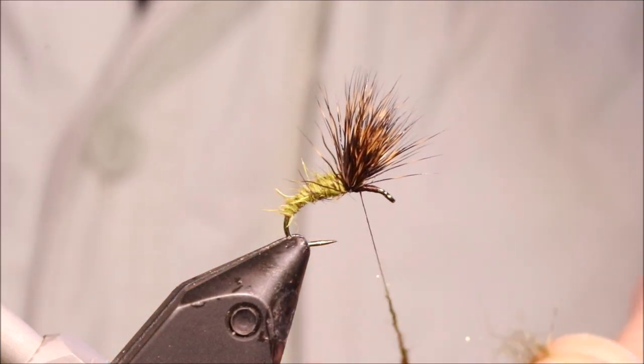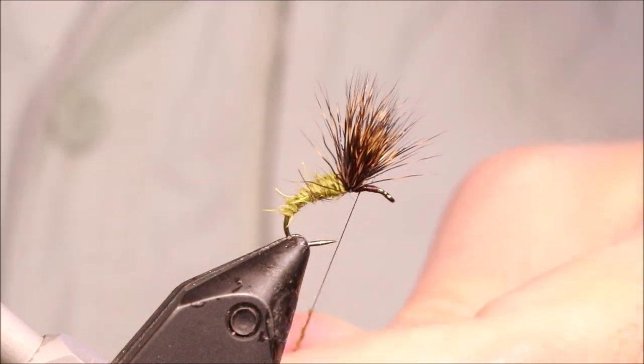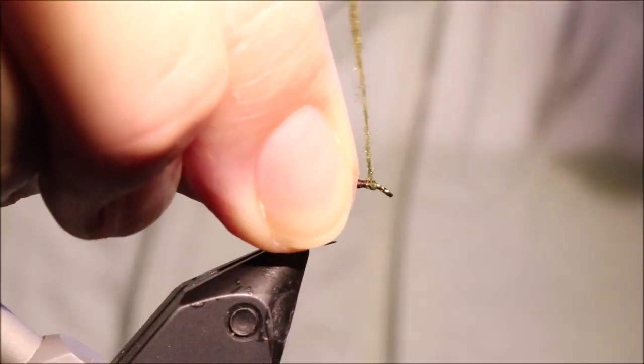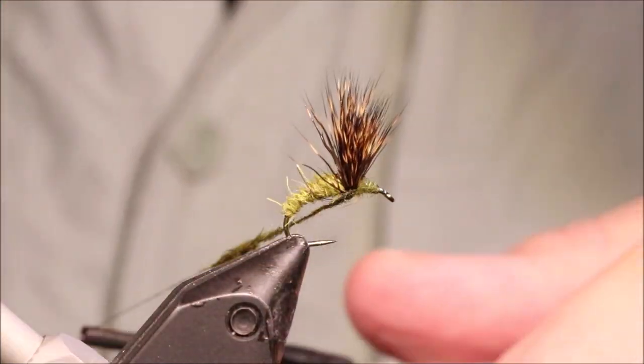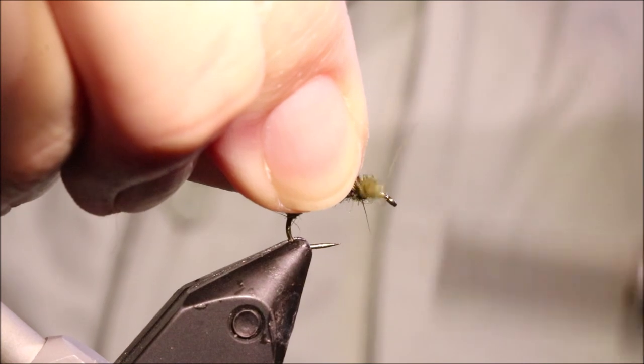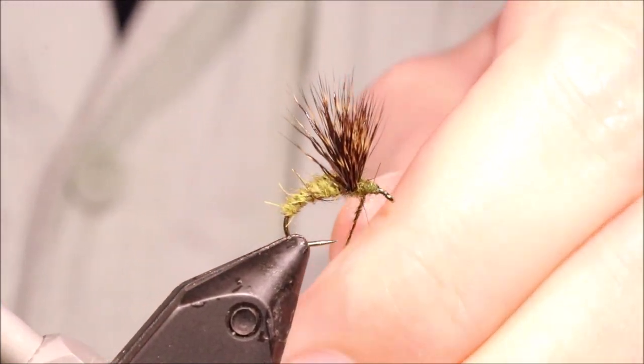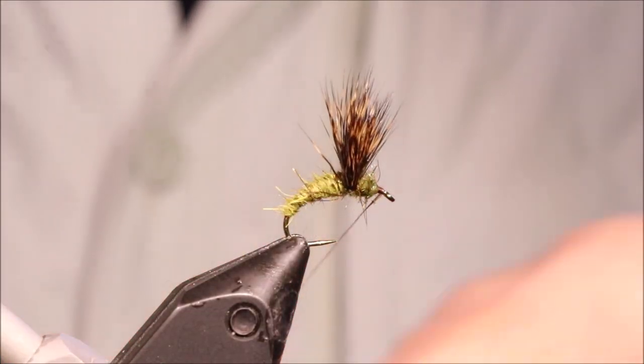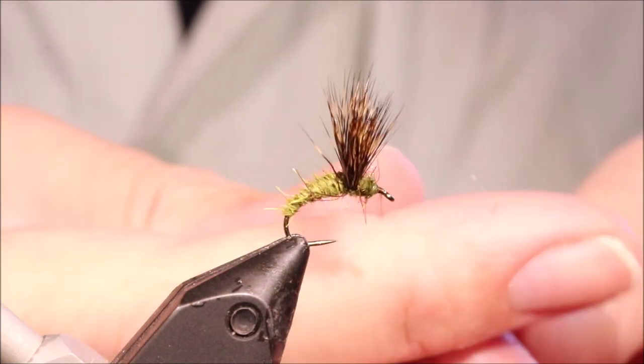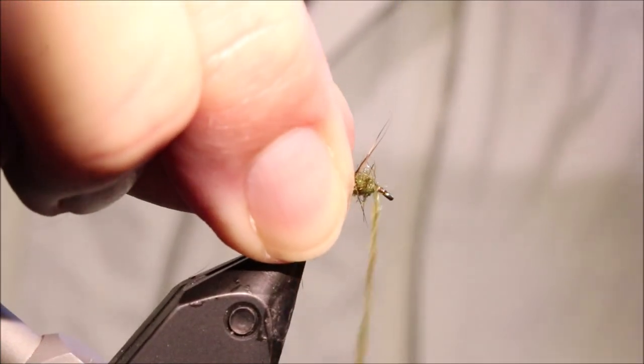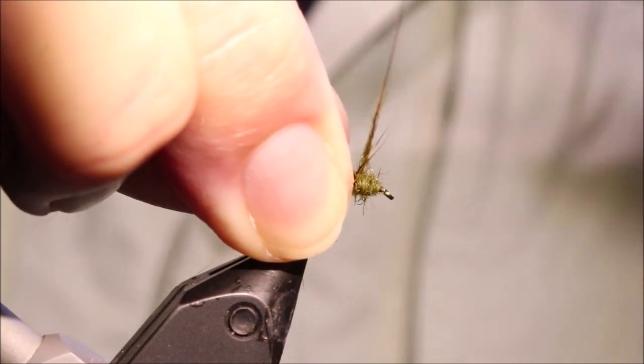And then for the thorax, you can use the same fur. I'm using a slightly darker mix. This is a dark olive, and this is squirrel and SLF. But it really doesn't matter. I'm just going to start here at the front and wind back up against the wing. If you want, you can actually even come a wrap behind.